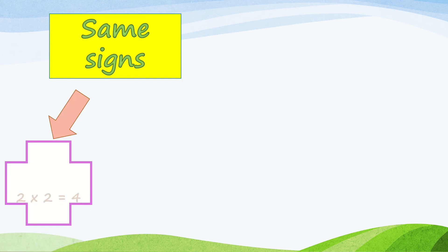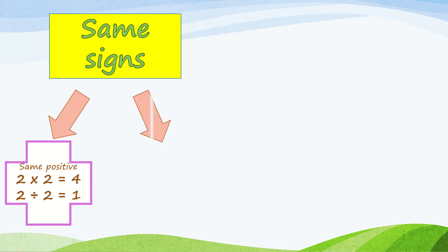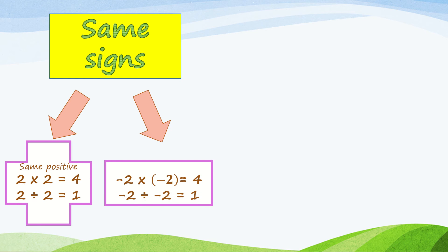Examples with same signs: as you can see, both problems have the same positive signs. 2 times 2 is equal to positive 4, and 2 divided by 2 is positive 1. Both problems also have the same negative signs: negative 2 times negative 2 is positive 4.